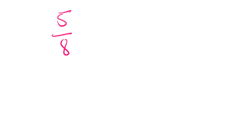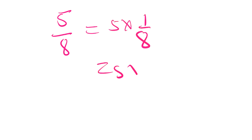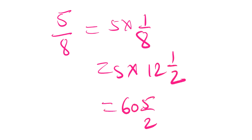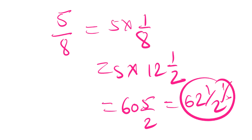How can we calculate 5/8 very easily? We can write this as 5 × (1/8). We know 1/8 is 12 and 1/2. If we multiply, it will be 65 by 2. We know if we divide it, it will be 2 plus 1/2. So this will be 62 and 1/2 percentage. So 5/8 ratio equals 62 and a half.